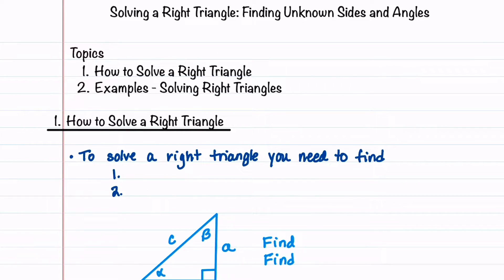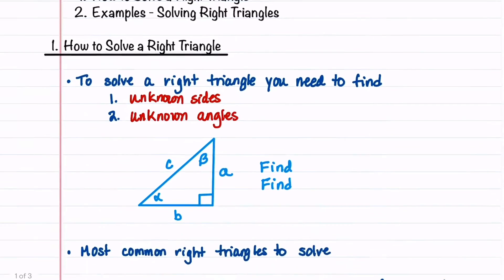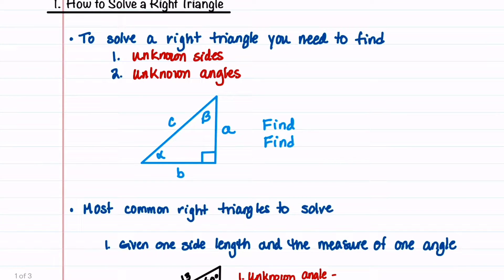When you're asked to solve a right triangle, you need to find the unknown sides and the unknown angles. In this picture of a right triangle, we would need to find the unknown sides A, B, and C, and then the unknown angles alpha and beta.